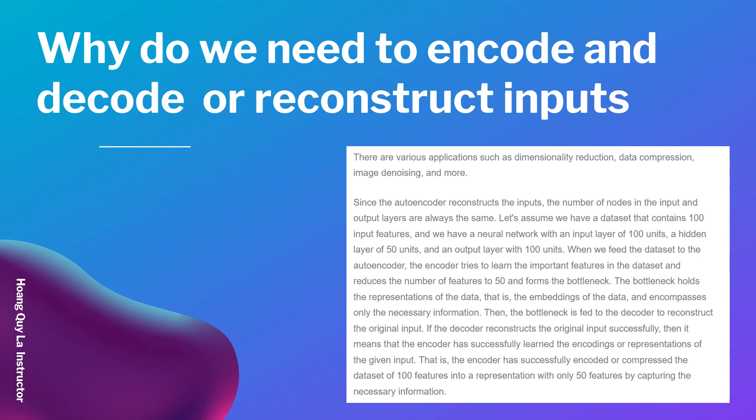Let's assume we have a dataset that contains 100 input features, and we have a neural network with an input layer of 100 units, a hidden layer of 50 units, and an output layer of 100 units. When we feed the dataset to the autoencoder, the encoder will try to learn the important features in the dataset and reduce the number of features to 50, forming the bottleneck. The bottleneck holds the representations of the data — the embedding — and encompasses only the necessary information.